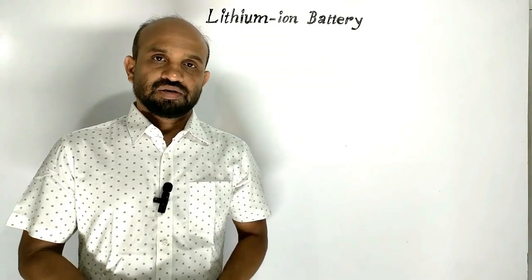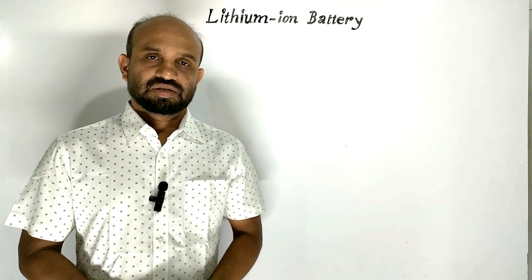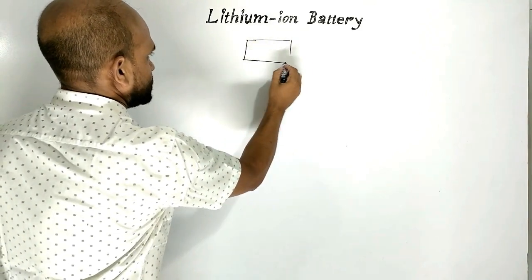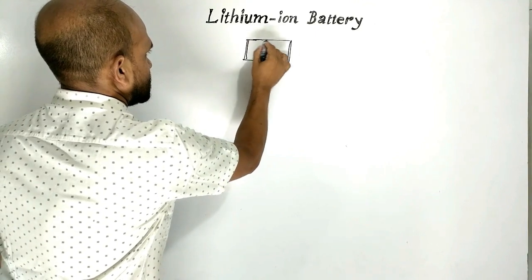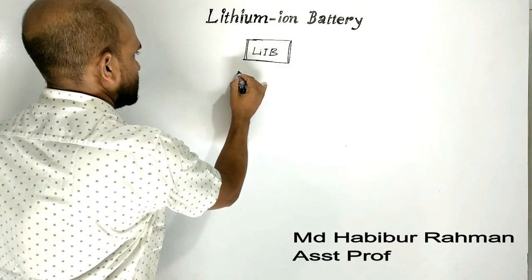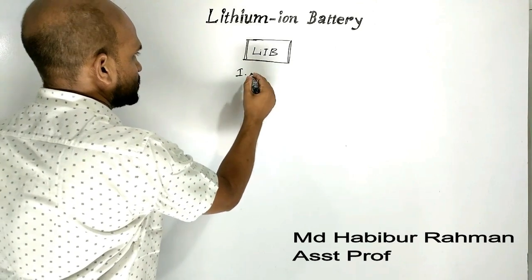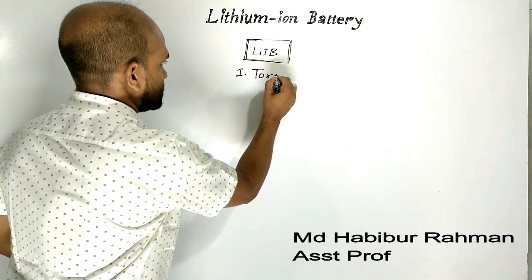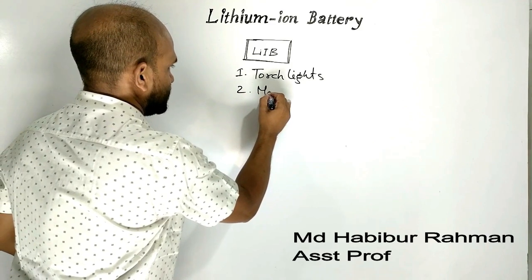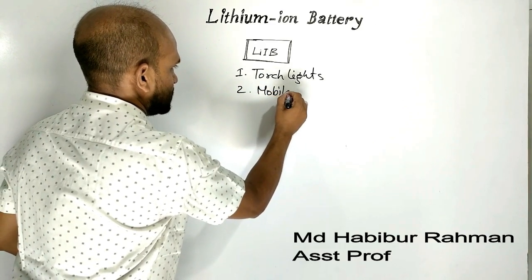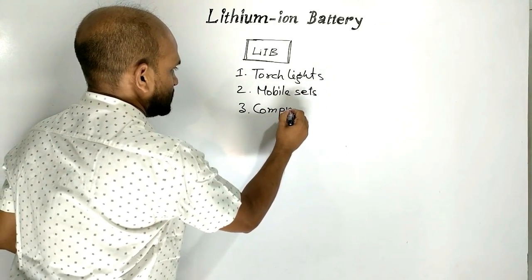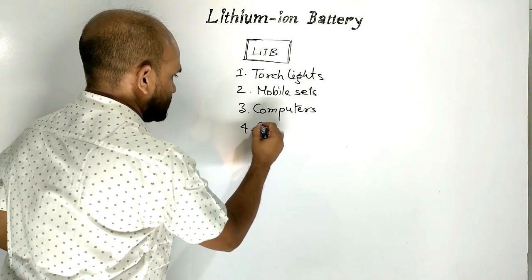Today's lesson is the lithium-ion battery. Let us see the schematic diagram of a lithium-ion battery. Lithium-ion batteries are used in touch lights, mobile sets, computers, and digital cameras.